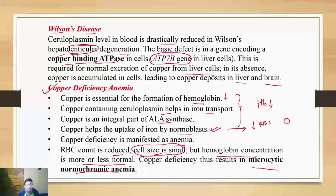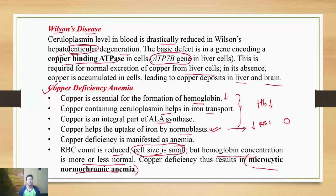In a few textbooks you may find microcytic hypochromic, which can occur in cases of severe deficiency accompanied by iron deficiency. But when iron is adequate and only copper is deficient, the type of anemia is microcytic normochromic anemia. This will be an MCQ question where microcytic hypochromic will be a distractor — so be very careful and select microcytic normochromic anemia.